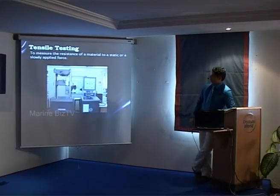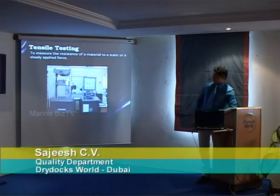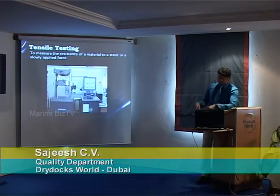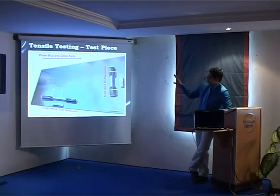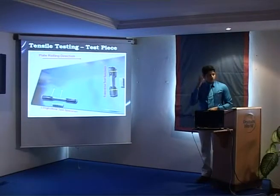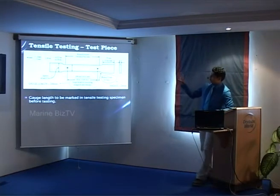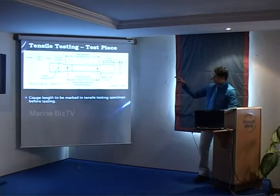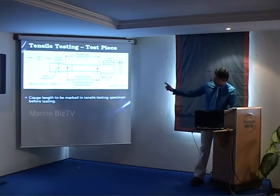Tensile testing measures the resistance of a material when a slowly or statically applied force is used. The test specimen is taken from the rolling direction of the plate — either a transverse or longitudinal test specimen. Longitudinal specimens are taken parallel to the rolling direction, and transverse specimens perpendicular to it. A typical test piece should have a reduced diameter section of 230 mm, a gauge length of 200 mm, a radius of 25 mm, and 75 mm for holding the bracket.